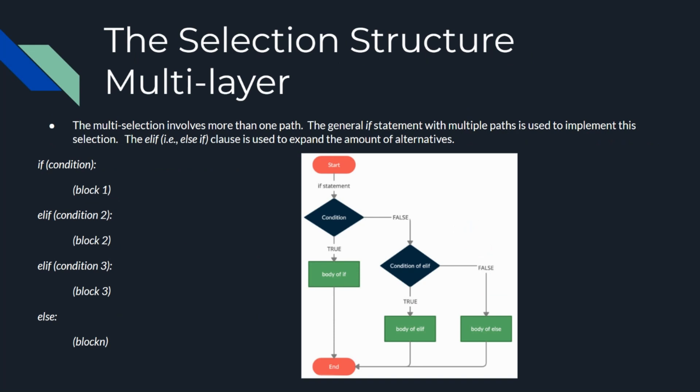The multi-path selection involves more than two alternatives. The general if statement with multiple paths is used to implement this structure. In Python, the ELIF clause is used to expand the number of alternatives. The if statement with n alternative paths has the general form: if, ELIF, else. ELIF stands for else if.